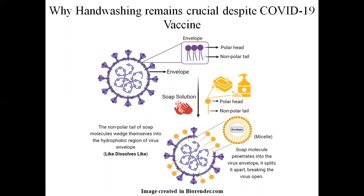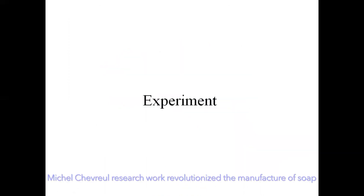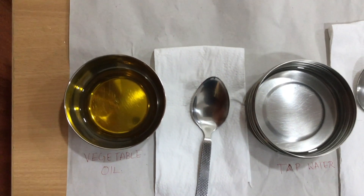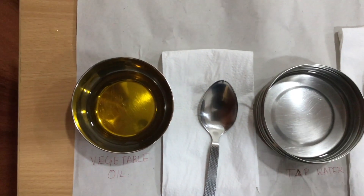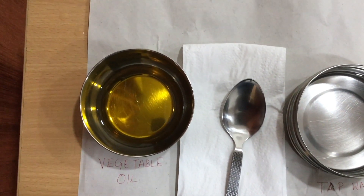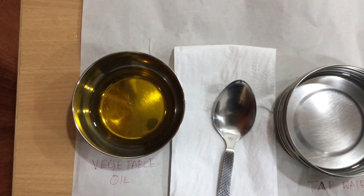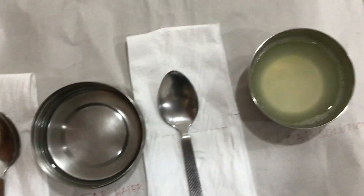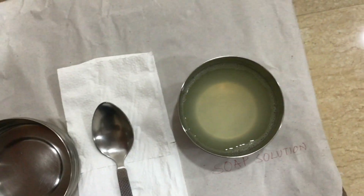Alcohol-based hand sanitizers kill the viruses in a similar fashion. Now I am going to demonstrate the science of hand washing by doing a simple experiment. In order to mimic the virus envelope, I am using vegetable oil here, which is a kind of lipid. We also have plain tap water and soap solution for our experiment.